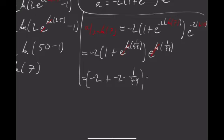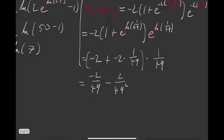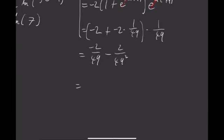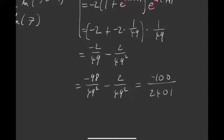So I get negative 2 plus negative 2 times 1 over 49 times 1 over 49, which gives me negative 2 over 49 minus 2 over 49 squared, which will become negative 2 over 49 squared, which is negative 100 over 2,401, which is 49 squared.